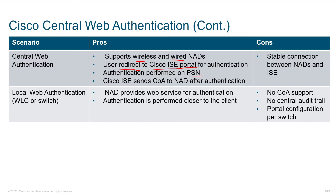Once those authentication credentials come in, we can process them. We can still leverage Active Directory or whatever is necessary on the back end. Once we authenticate that user, we can leverage change of authorization and set up that network access device with an appropriate VLAN and an appropriate access list for that particular user. Additionally, you can perform local web authentication, where authentication is done locally on the wireless LAN controller or an individual switch.